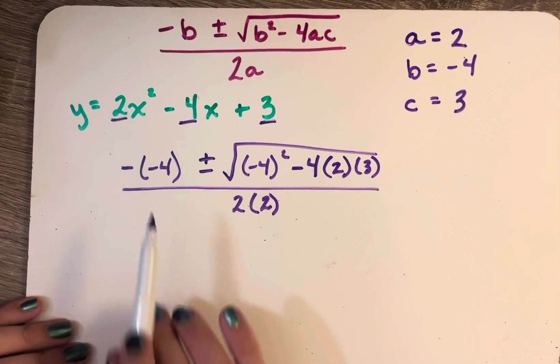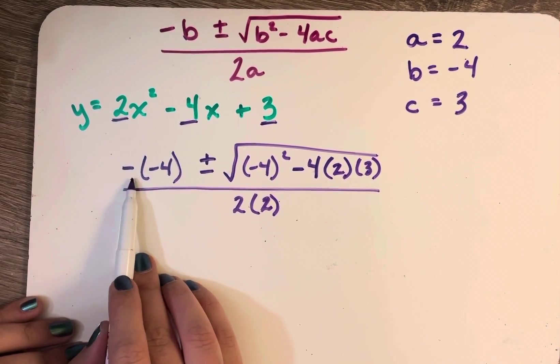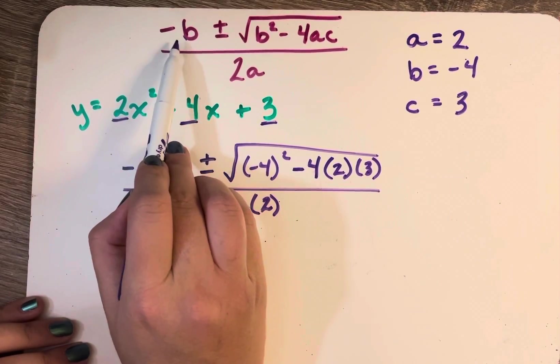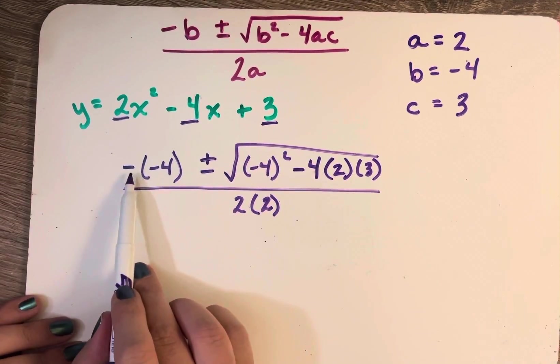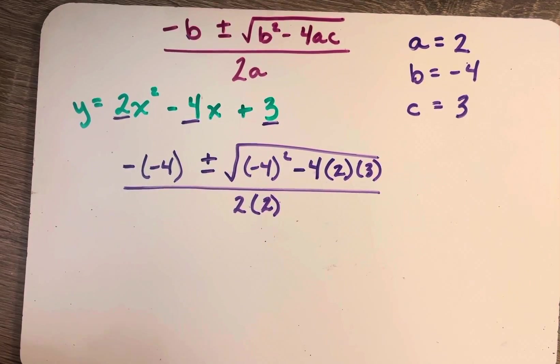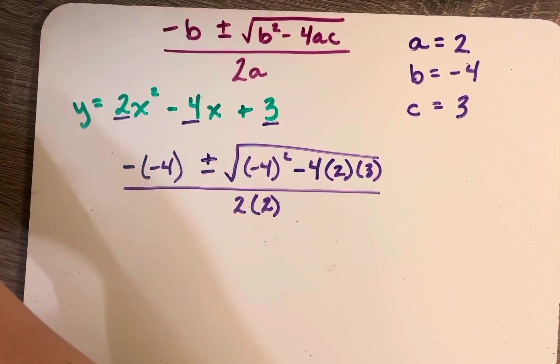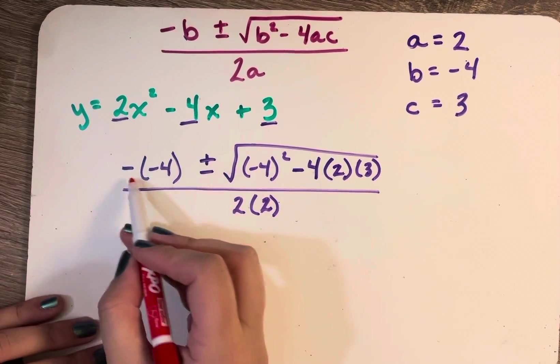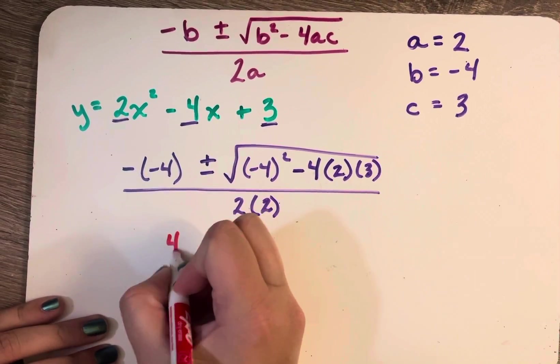So let's start simplifying. So this negative out here, the negative in front of b that starts off our formula, that tells me I'm changing the sign. So this minus negative 4, let's switch to a different color so it's easier to see.